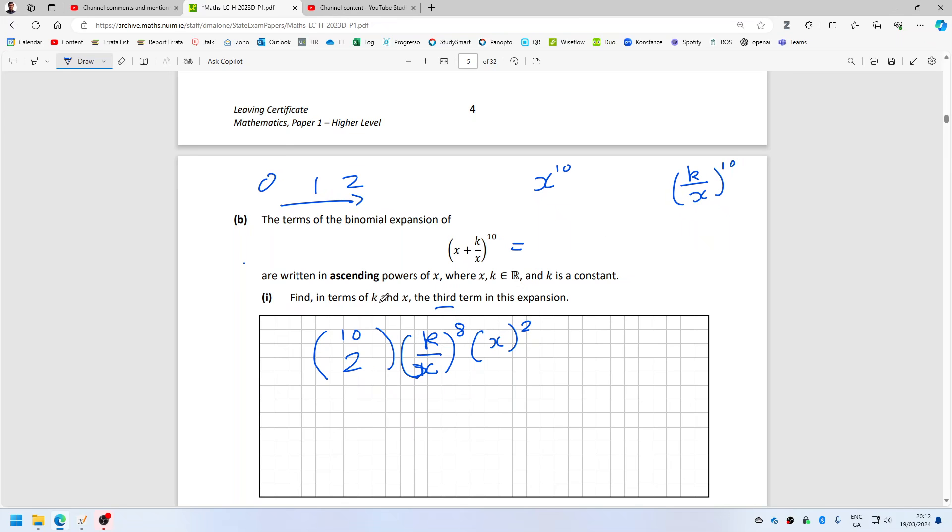Fine, in terms of k and x, the third term in the expansion. I think that's okay, I hope that's okay. 10C2, so that would be 45k power 8 x squared over x power 8, so that would equal 45k⁸ over x⁶.